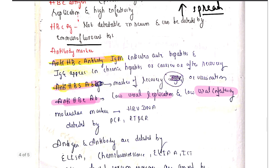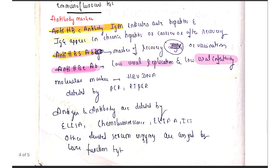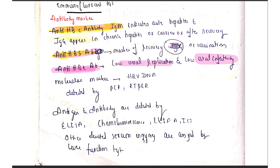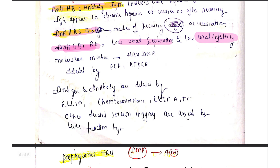The important point about the Hepatitis B pre-core antibody (anti-HBe): while the pre-core antigen indicates high infectivity and high viral load, if antibodies to the pre-core antigen appear in a patient's serum, that means there is a low viral replication rate and reduced infectivity. The patient is no longer highly prone to spreading the disease.